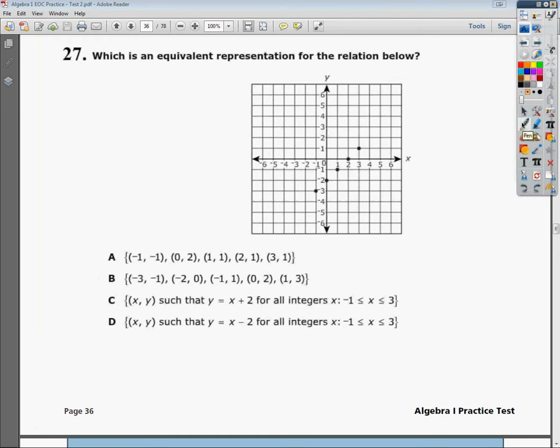Alright, this is the Algebra 1 practice test 2, question number 27. The question says, which is an equivalent representation for the relation below? We're going to look at the graph and see if the points match up. Let's just match some points quickly.